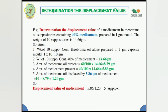For example, the determination of the displacement value of a medicament in theobroma oil: suppositories contain 40 percent of the medicament, prepared in a one-gram mold. The weight of 10 suppositories is 14.66 grams. Step one: the weight of 10 suppositories containing theobroma oil alone prepared in a one-gram capacity mold equals 1 × 10 = 10 grams. Step two: the weight of 10 suppositories containing 40 percent medicament equals 14.66 grams.